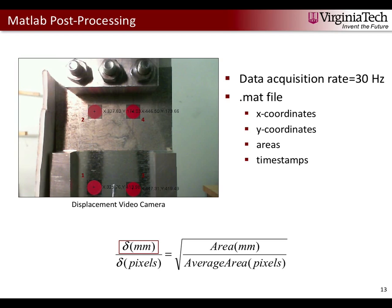Because our camera records at 30 frames per second and our MATLAB code does frame-by-frame analysis, we have a data acquisition rate of 30 Hz. Per frame, the code picks up red targets, recording the x and y coordinates of each target's centroid, the areas of each target, and the frame timestamp. To calculate relative displacement, we get the distance between the top and bottom targets in pixels, then use the target diameter (19 mm) and average pixel area of the first 50 data points to convert pixels to millimeters.